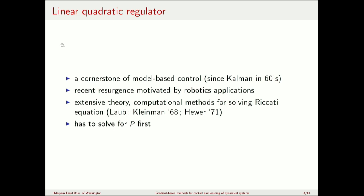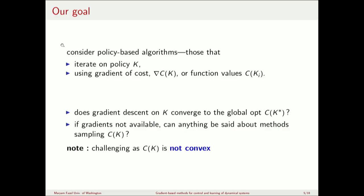The classical version, which builds the P matrix, has an extensive theory and computational guarantees. For example, solving the Riccati equation has computational iteration guarantees going back to the 60s and 70s. But one issue is that these methods solve for P first, and then you obtain K-star. Our goal is to revisit this classical problem but look at it differently.